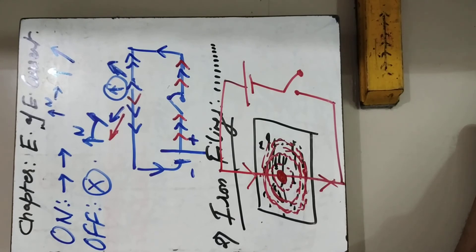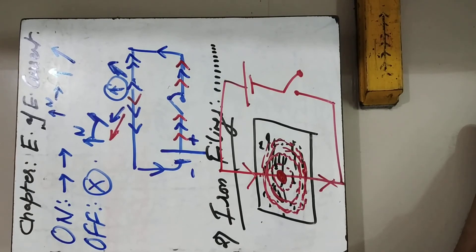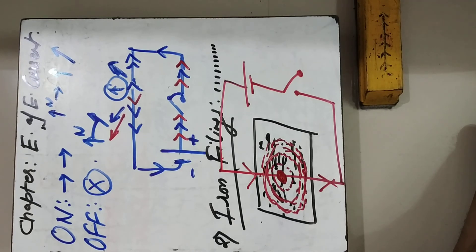So to summarize the magnetic effect of electric current: it is a very simple concept — there will be a magnetic field around a current-carrying conductor. We have seen two experiments: the magnetic compass deflected when current flowed, and the iron filings experiment shows the pattern of the magnetic field. In the next video, we will show you in which direction the magnetic field will be. Thank you very much.